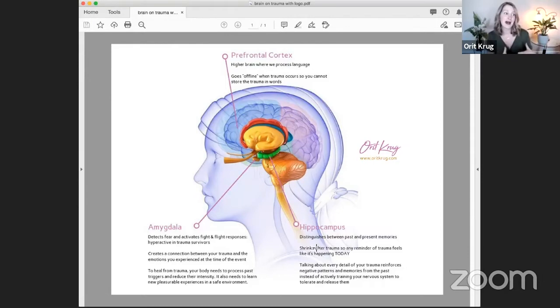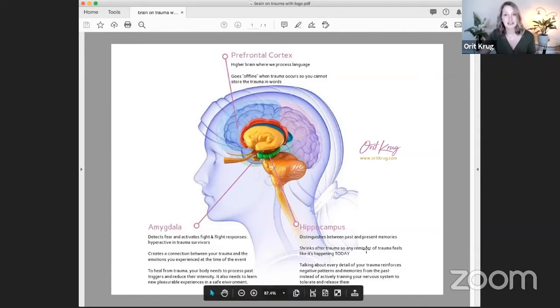Now your prefrontal cortex is saying I'm safe. Now my partner is not my abusive past partner, but your hippocampus cannot distinguish that. Like your brain literally cannot distinguish that a weird look from your partner means that you're about to get hit physically or emotionally, because that was somewhere along the lines of the same look that your father gave you before they hurt you. Your prefrontal cortex can have all the say that it wants, but your hippocampus literally shrinks after trauma. The volume shrinks. So it's actually not even able or capable of distinguishing the past from present until you resolve your trauma until you release that trauma. And it makes it feel like the stuff from the past is happening today. And that's why talking about every detail of your trauma, telling the same old stories, it just reinforces these negative patterns and memories from the past. Instead of actively training your nervous system to tolerate and release them.